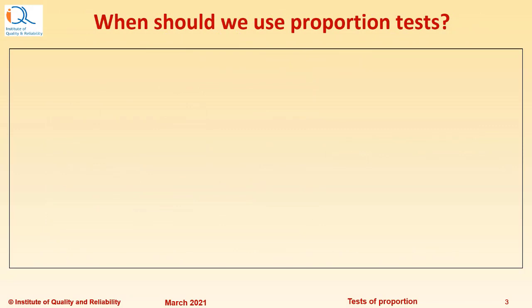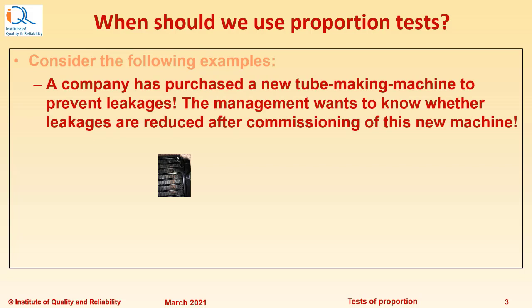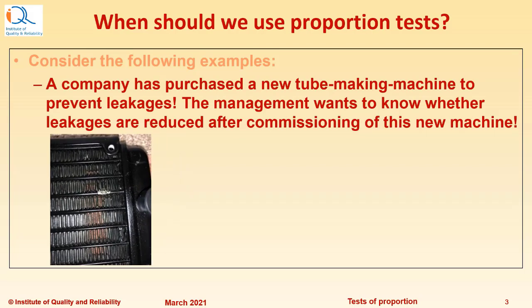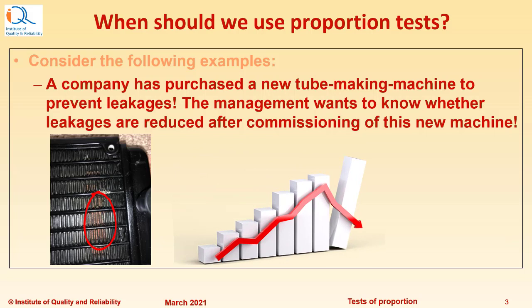When should we use Proportion Tests? Consider the following examples. A company has purchased a new tube making machine to prevent leakages. The management wants to know whether leakages are reduced after commissioning of this new machine.